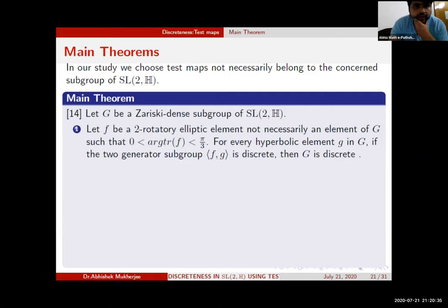These are our main theorems. In our study we choose test maps not necessarily belonging to the concerned subgroup in SL(2,H). Let G be a Zariski-dense subgroup of SL(2,H). Let f be a 2-rotatory elliptic element not necessarily an element of G, satisfying 0 < arg(tr(f)) < π/3. For every hyperbolic element g in G, if the two-generator subgroup (f,g) is discrete, then capital G is discrete.